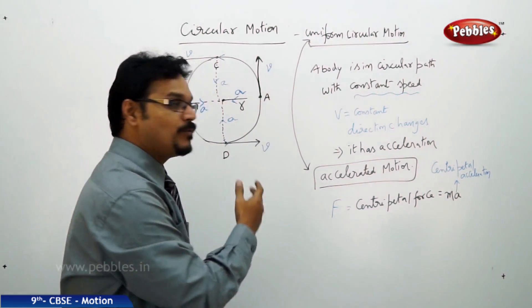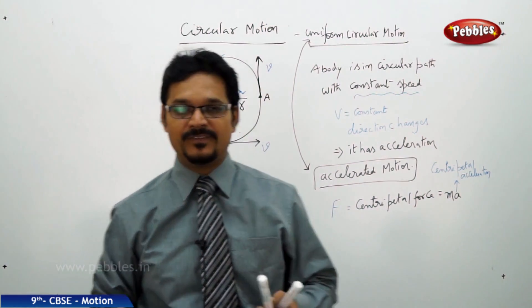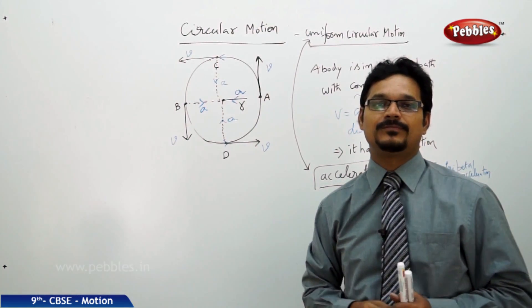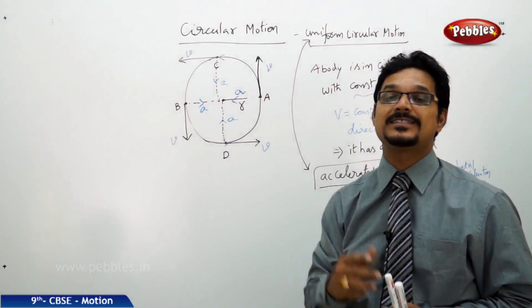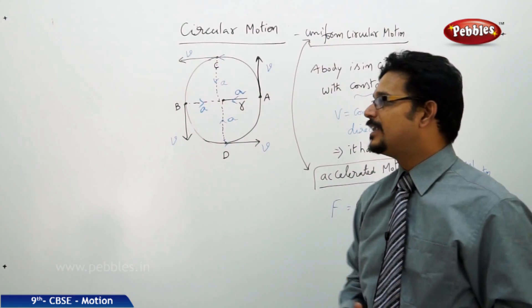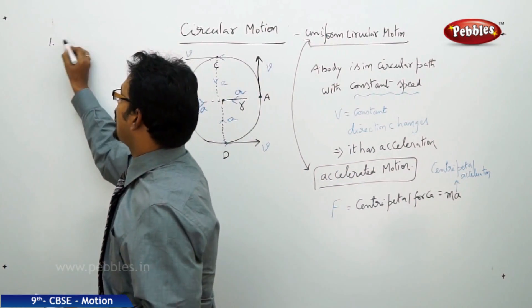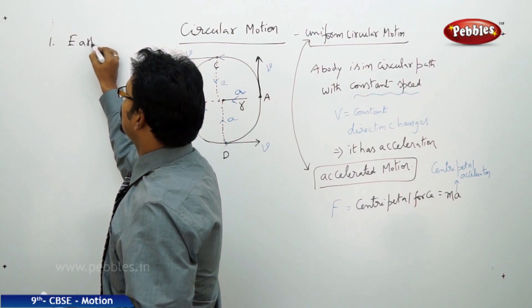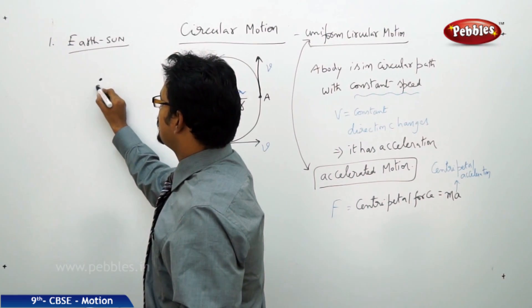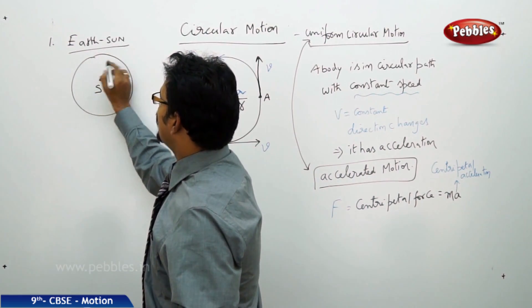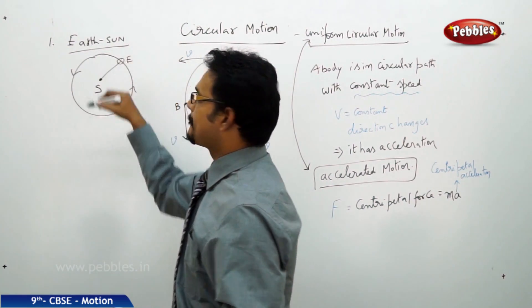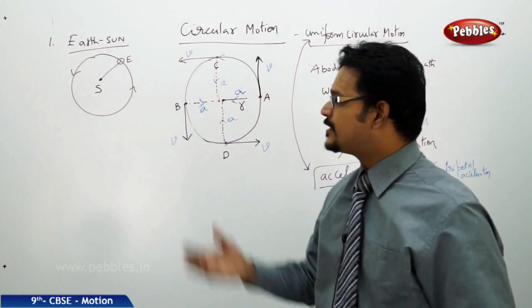Circular motion has many practical examples in physics and in real-life situations. Take the example of our solar system — all the planets revolve around the sun in circular motion. Specifically, in the Earth-Sun system, the Earth is rotating around the sun. So we can say the Earth is in circular motion.